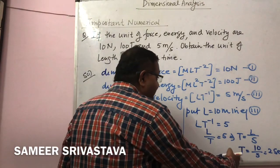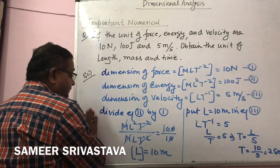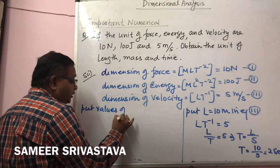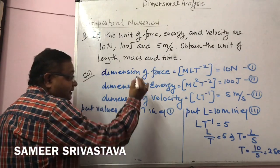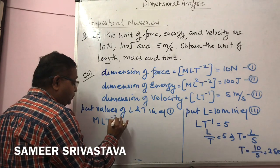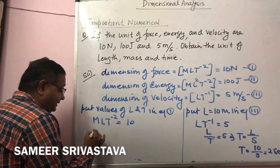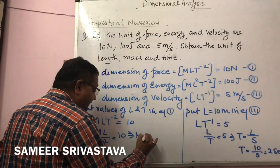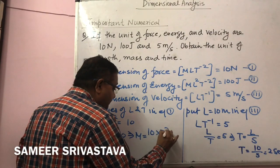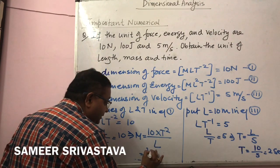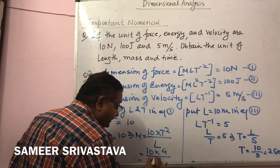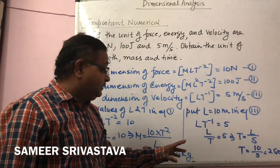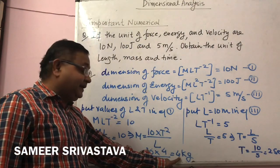Substituting values of L and T into equation 1: MLT⁻² = 10. We can write M·L/T² = 10, so M = 10·T²/L = 10 × 4 / 10 = 4 kg. Final answers: length = 10 meters, time = 2 seconds, mass = 4 kilograms.